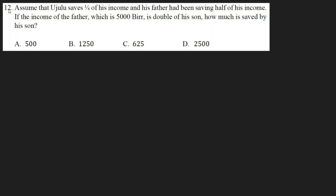Assume that Ujulu saves one-fourth of his income, and his father had been saving half of his income. If the income of the father, which is five thousand birr, is double of his son, how much is saved by his son?